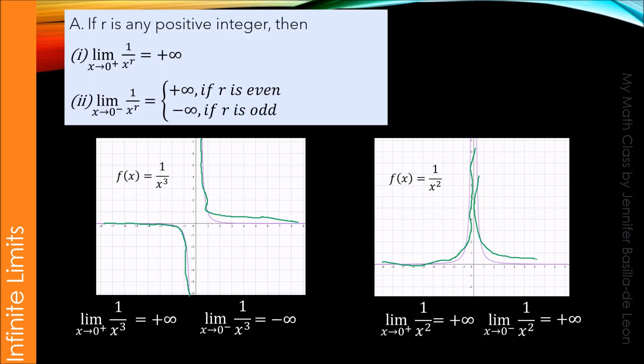With these, we can derive the laws for infinite limits. If r is any positive integer, then the limit of 1 over x raised to r as x approaches 0 from the right is positive infinity. On the other hand, if we have 1 over x raised to r as x approaches 0 from the left, there are two conditions to note: if r is even, the result is positive infinity; if r is odd, the result is negative infinity.